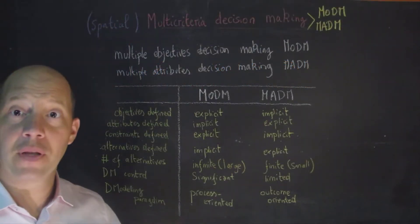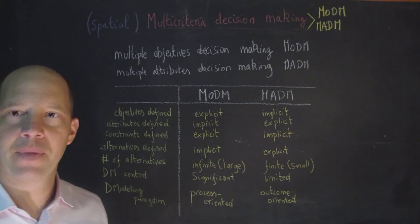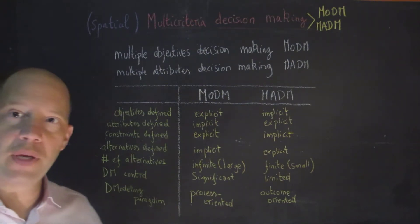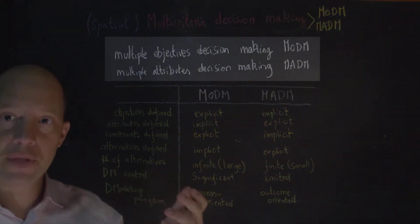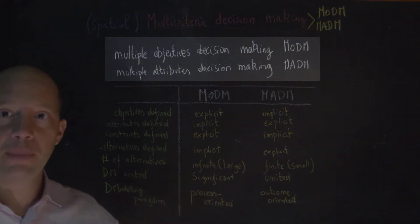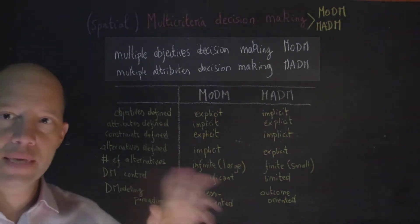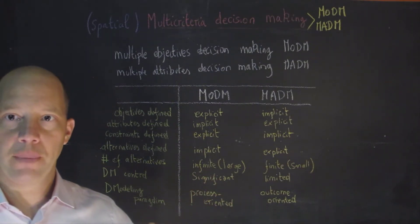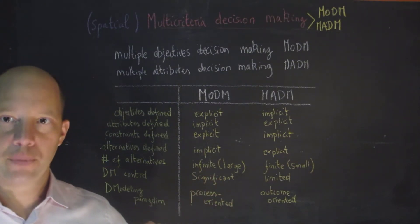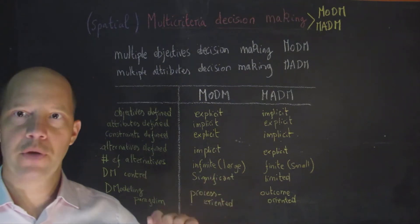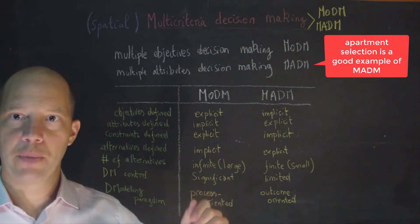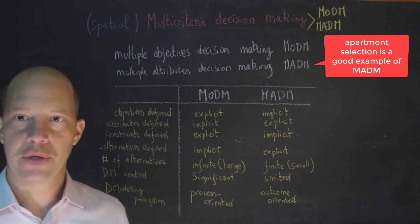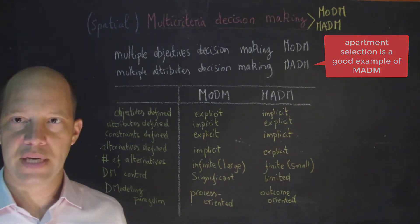One important part of the decision-making process is whether we are talking about multiple objective decision-making or multiple attribute decision-making. The examples provided earlier are straightforward for multiple attribute decision-making. For instance, when you purchase or rent an apartment, you have different attributes and you're trying to make a decision based on how you score on these attributes.